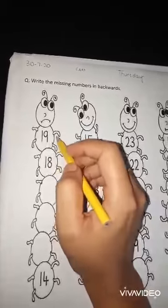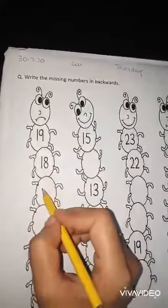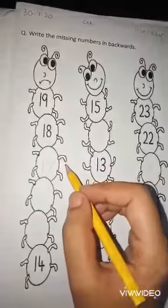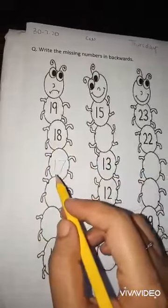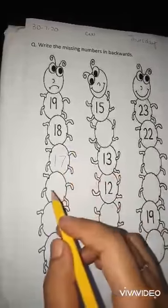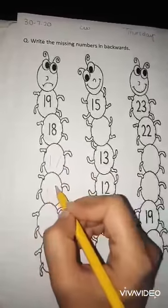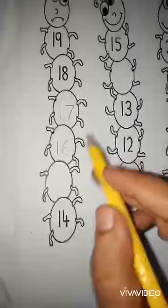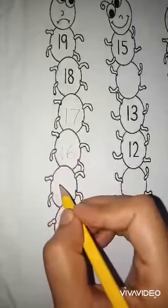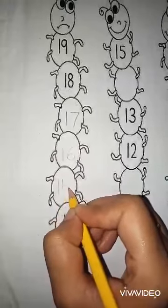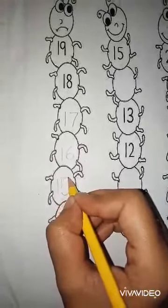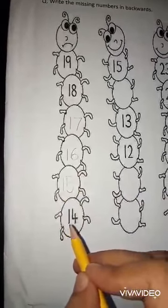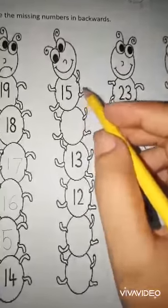It's number 18. And what number at the back of 18? It's 17 — 17 is at the back of 18. What number at the back of 17? It's 16 — 16 is at the back of 17. What number at the back of 16? It's 15 — 15 is at the back of 16. What number at the back of 15? It's 14, and it is already written.